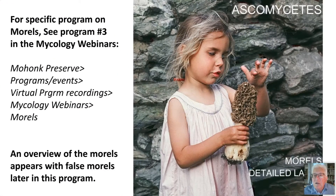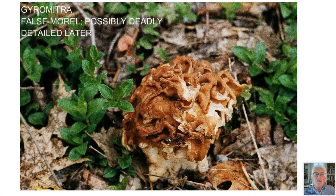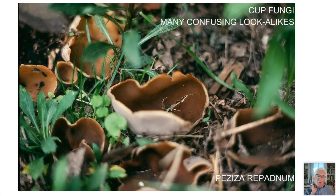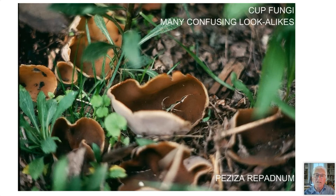We'll come back to morels a little later — there's also a separate program on morels in the archives. We'll talk about the false morel, the possibly deadly Gyromitra, a bit later. In the meantime, let's look at some other discomycetes or ascomycetes. If you remember a few slides ago, we had that brilliant orange cup — Sarcoscypha is the genus. They're nicely brightly colored, but many others are dull and tan, looking like this cup, with spores in sacs inside.